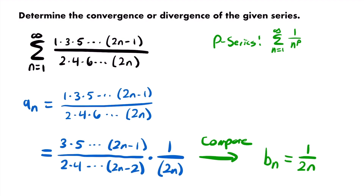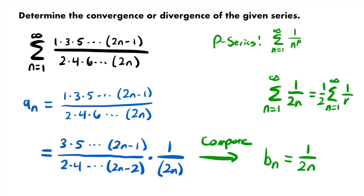The comparison series is the sum from n equals 1 to infinity of 1 divided by 2n. We can factor out 1/2 to get (1/2) times the sum of 1/n, which is a p-series with p equals 1 — that's the harmonic series. We know the harmonic series diverges. So this is our comparison: a divergent series. For the direct comparison test, to conclude our original series also diverges, we need to show that a sub n is bigger than b sub n.